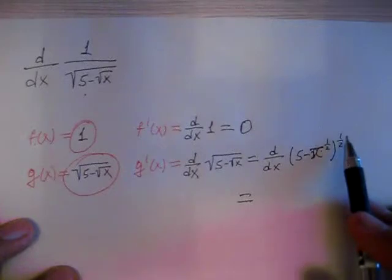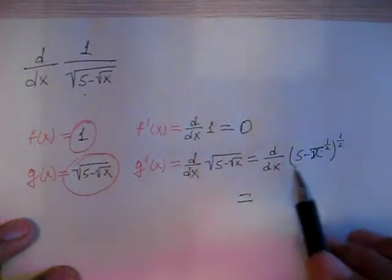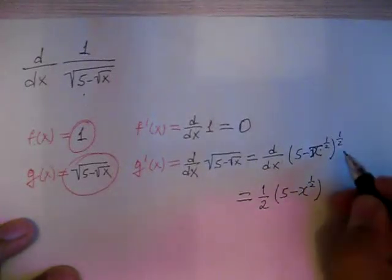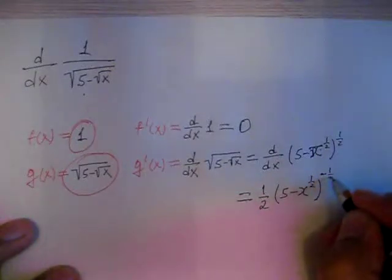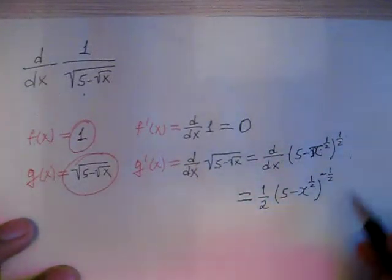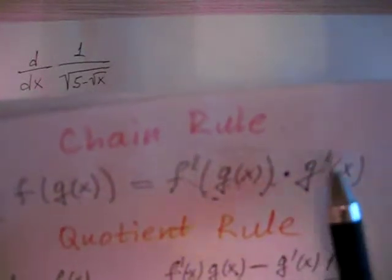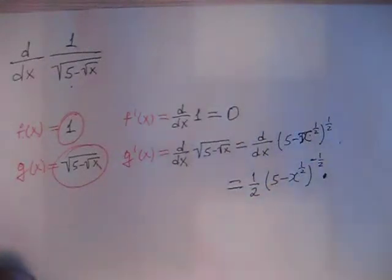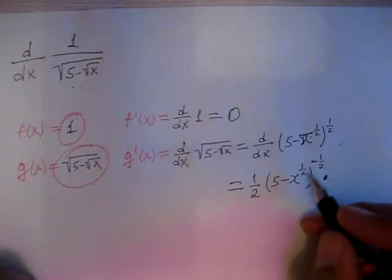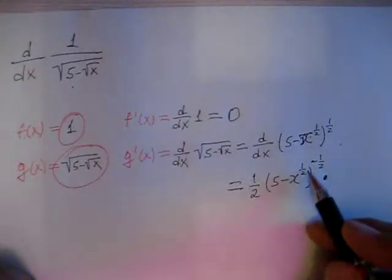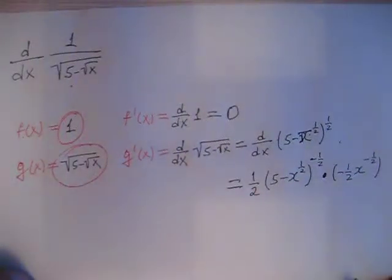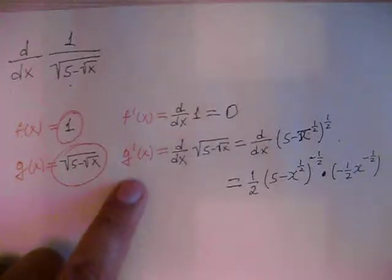Using the power rule on the outer function: one-half in front of the parentheses, giving one-half times (5 minus x) to the power of one-half minus one, which is negative one-half. That is the derivative of the outer function. Now we multiply by the derivative of the inner function. The derivative of 5 is zero, so we don't write it. The derivative of negative x to the one-half using the power rule gives minus one-half times x to the minus one-half.